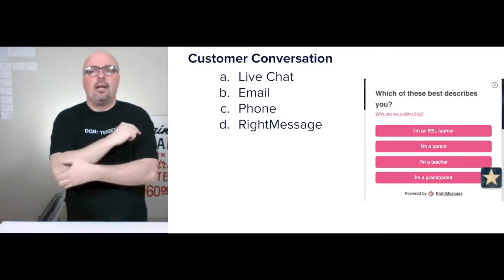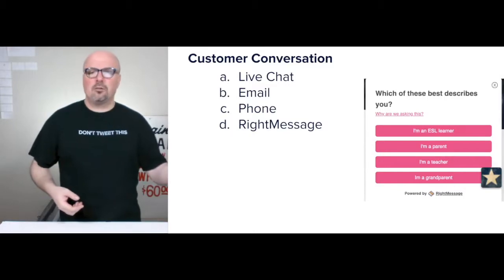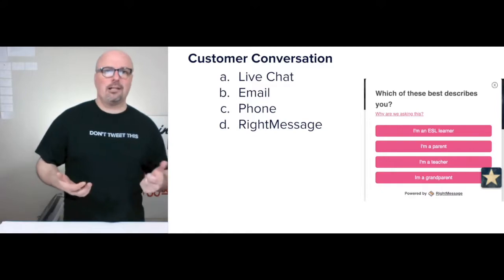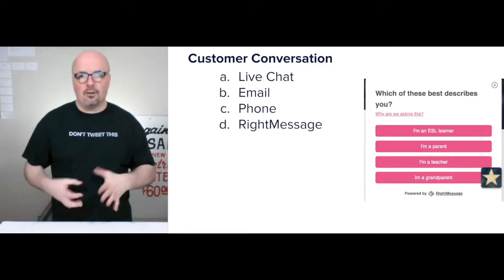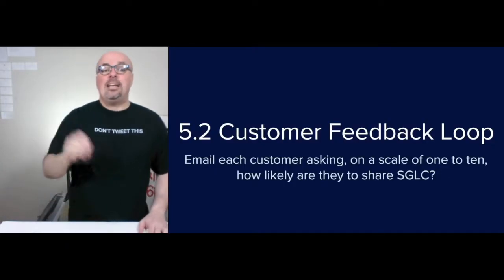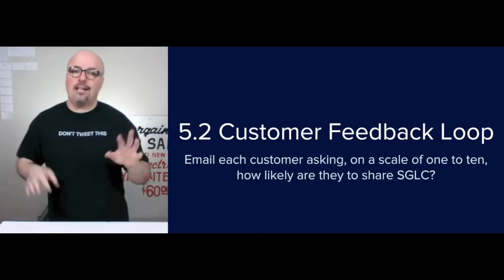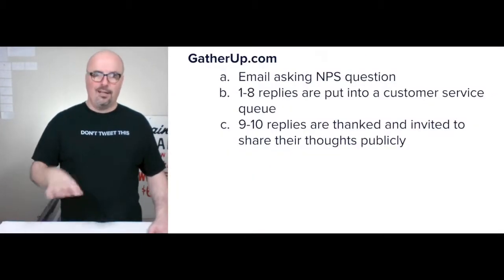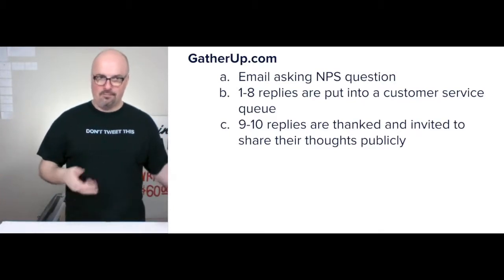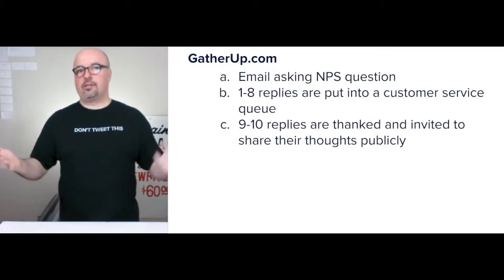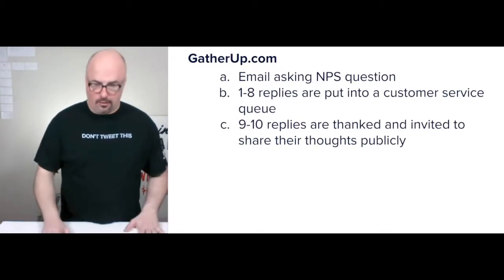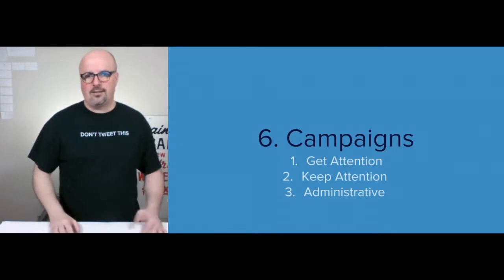There's an example of that segmentation question. At this point, if they're an ESL learner we go with that. If they're a parent, teacher, or grandparent, we start with the assumption that they're an American unless they tell us otherwise. The customer feedback loop: email each customer asking on a scale of one to 10, how likely are they to share this brand. I use GatherUp.com — if they reply with a one to eight, it puts them into what I refer to as a customer service queue. Nine and ten replies are thanked and invited to share their thoughts publicly, and given shortcuts for their convenience to do so.